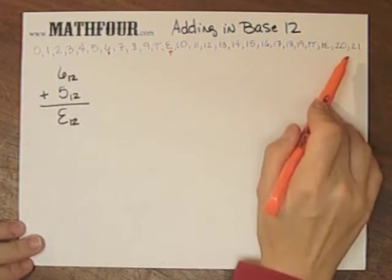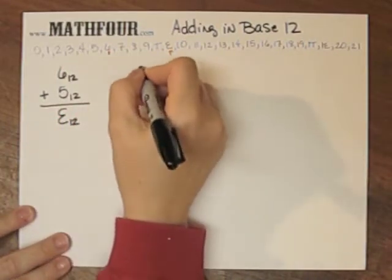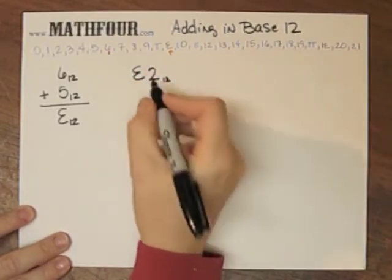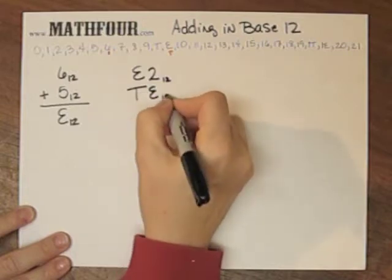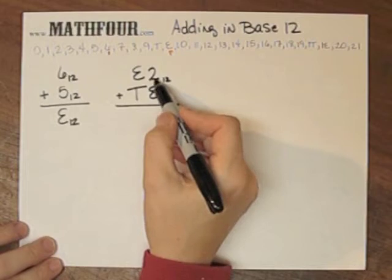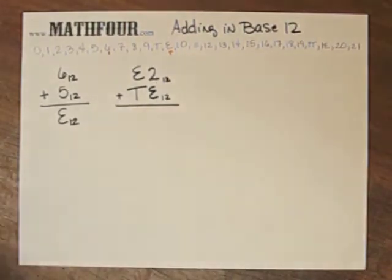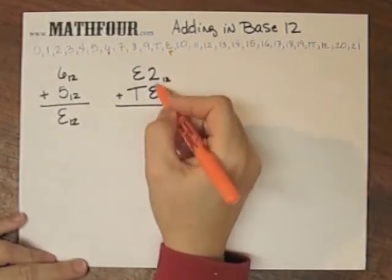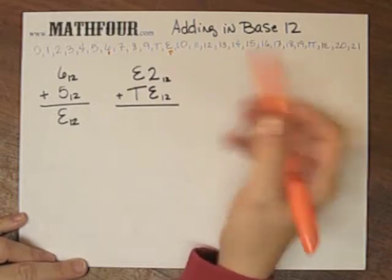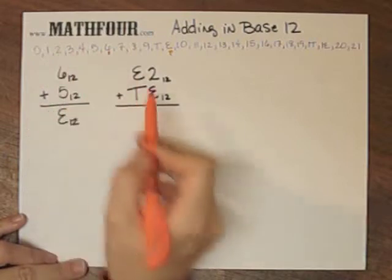So this is going to be helpful when I add them. So the next one is E2 base 12 plus TE base 12. I'm going to add these two and I'm going to add E to 2 or 2 to E, either one. So I can either consider this 11 plus 2 is 13 and then I have to convert that to what it means base 12 or I can start at 2 and count 11.